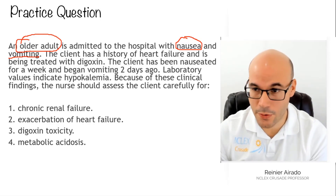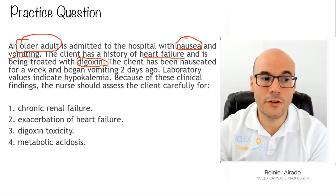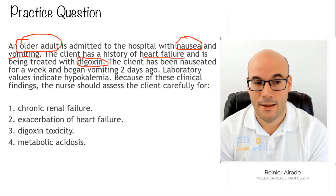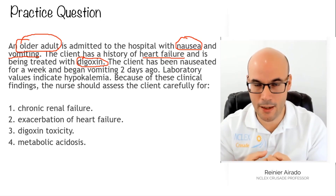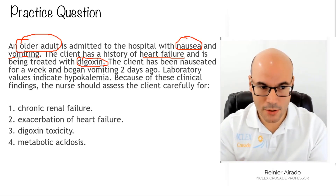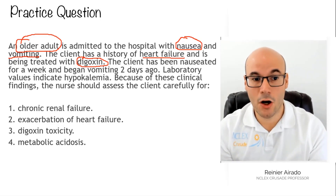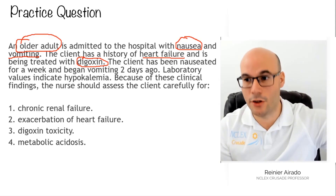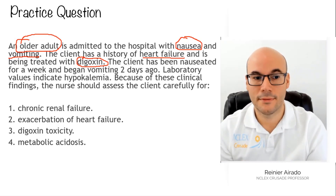The client has a history of heart failure and is being treated with digoxin — so now they're introducing a medication. You have to think: what is the relationship between the clinical manifestations, the patient's age, and this medication? Vomiting, digoxin, and an elderly patient — is there a relationship? Yes, there is.